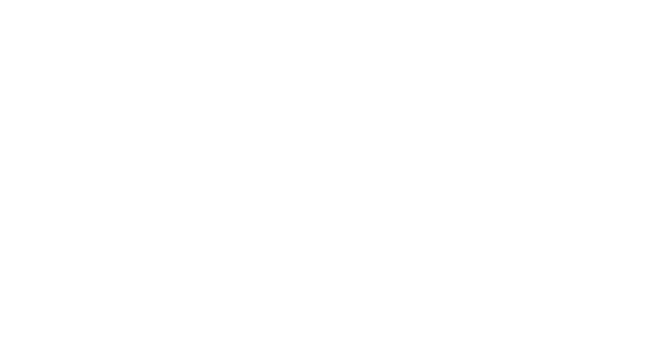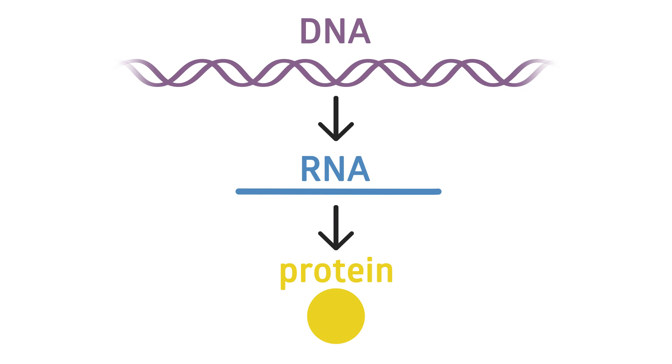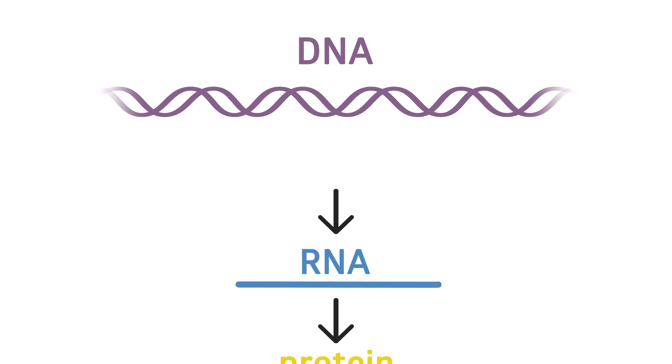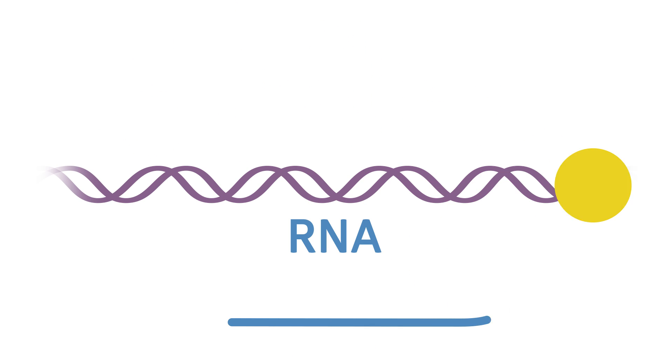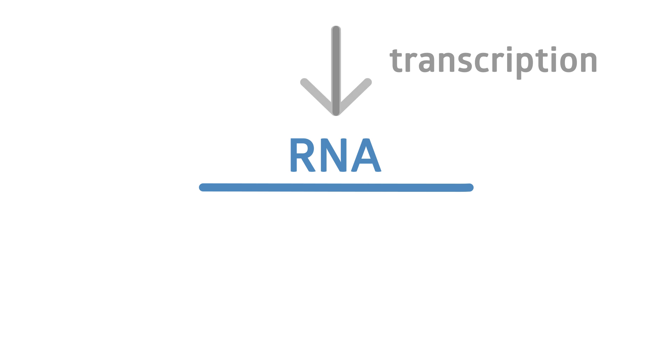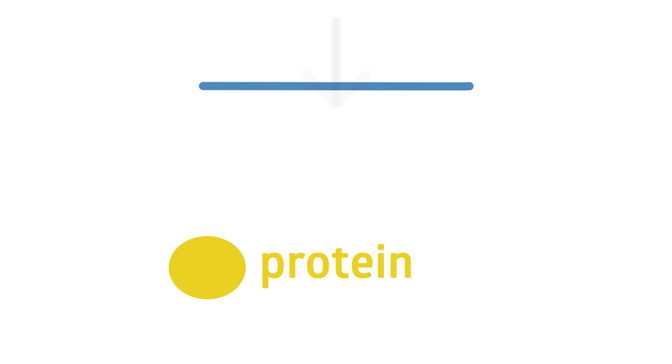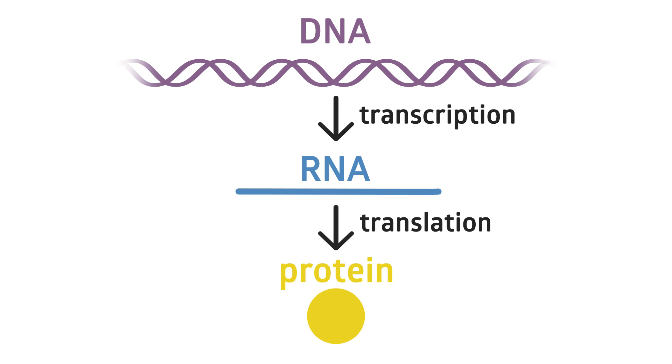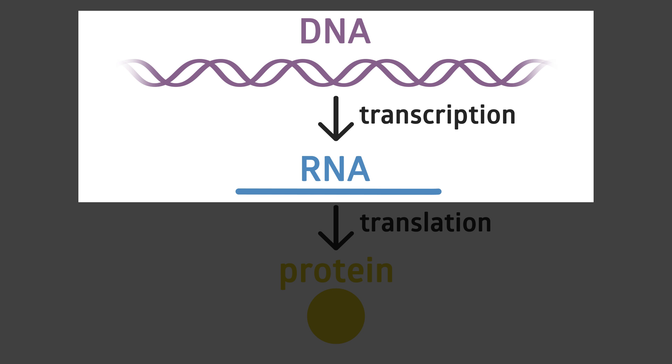When we say expression, we're really talking about the first step of what we call the central dogma of biology. The central dogma refers to the flow of genetic information in a cell. The genetic information encoded in DNA is copied into an RNA molecule through a process called transcription. And then the information in that RNA is copied into a protein through a process called translation. Scientists often look at this first step and detect which genes have been transcribed into RNA. Some genes are transcribed in every cell of the entire plant, but other genes are only transcribed in specific cell types — those are the genes that tell a leaf cell to be a leaf cell or a petal cell to be a petal cell.